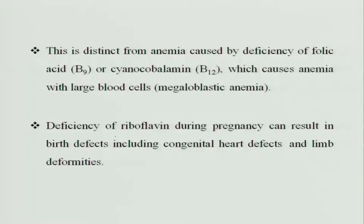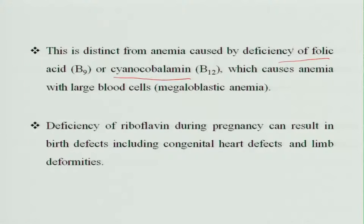This is distinct from anemia caused by deficiency of folic acid, cyanocobalamin, or vitamin B12. Those two vitamins cause anemia where the RBC does not mature and remains as a megaloblast, so the size of the RBC is increased. Riboflavin deficiency during pregnancy can result in birth defects including congenital heart defects and limb deformities.